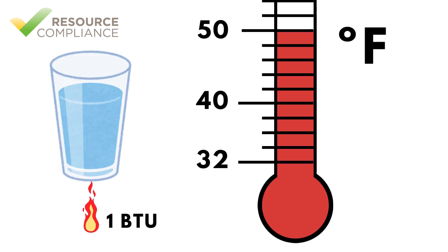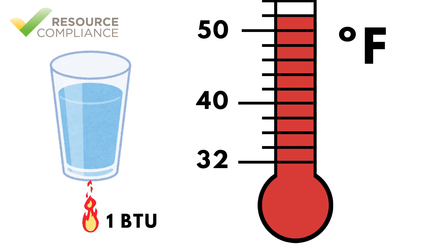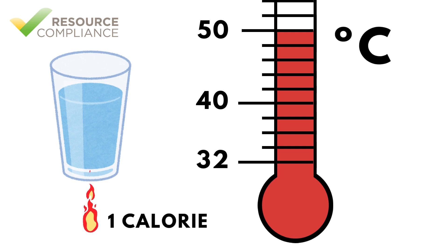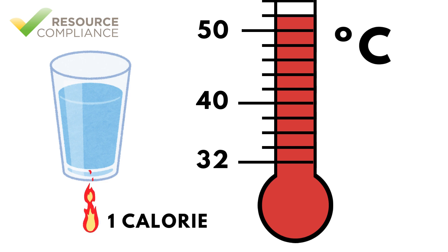One BTU is the amount of heat required to raise the temperature of one pound of water one degree Fahrenheit. Similarly, one calorie is the amount of heat required to raise the temperature of one gram of water one degree Celsius.